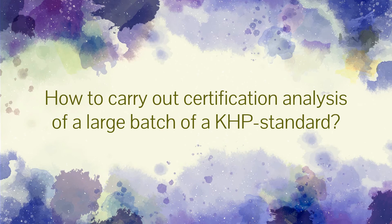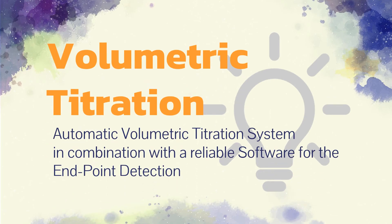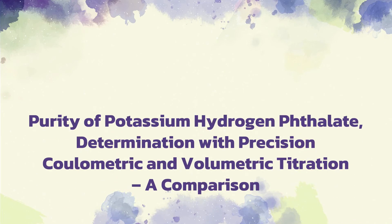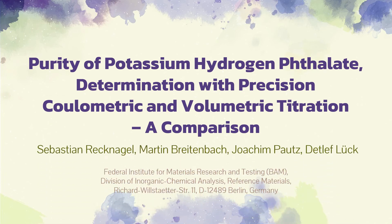To overcome these problems, a special experimental design should be developed to carry out certification analysis of large batches of KHP standards. One proposal is to use a commercially available automatic volumetric titration system in combination with reliable software for the endpoint detection. With this, it should be possible to produce equivalent results with the same accuracy in comparison to a definitive method handled by a fundamental apparatus for traceable precision coulometry. This idea was further explored in a study entitled 'Purity of potassium hydrogen phthalate: Determination with precision coulometric and volumetric titration — A Comparison,' done by Rechnagel et al. and published in the journal Analytica Chimica Acta in 2007.